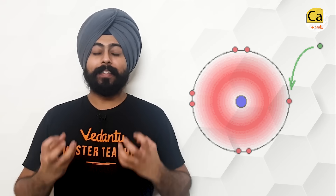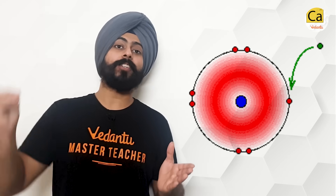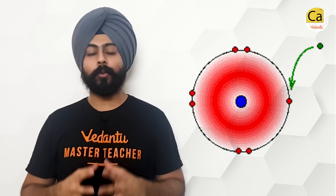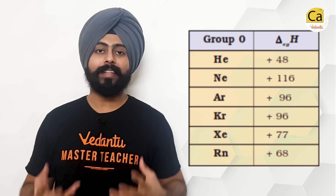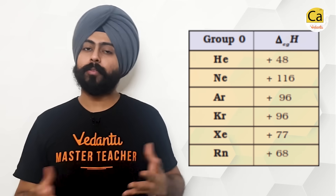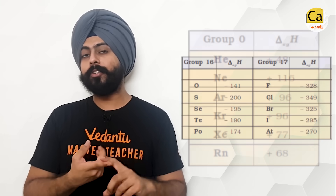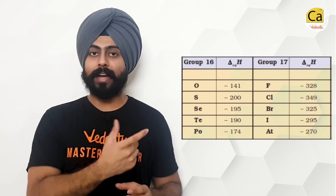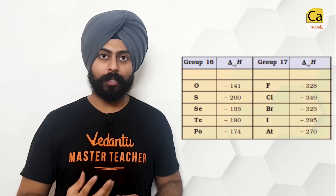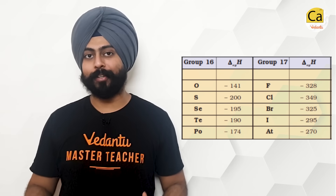Electron gain enthalpy is the energy absorbed or released whenever you give an extra electron into an atom — that is, when you convert a neutral atom into an anion. For noble gases, this is a positive value; the reaction is endothermic because they don't want to change their electronic configuration. For halogens and chalcogens, this value has a negative sign but a very large magnitude, meaning species like chlorine, bromine, fluorine, oxygen, and sulfur will release a lot of energy on gaining an electron. Electron affinity is mathematically almost the same in magnitude but with the opposite sign convention.